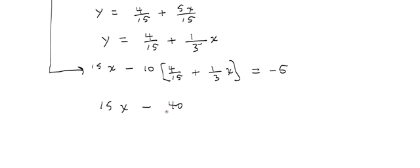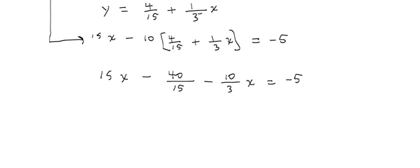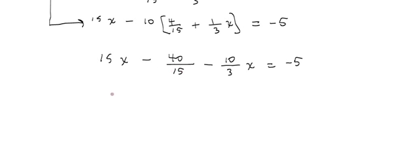Well, that'll simplify it. Let's carry it over for now, 40 over 15, and then we'll simplify it next. And then negative 10 times a positive 1 third x is going to give us a negative 10 thirds x is equal to a negative 5. And like I said, we can simplify this. So we have 15x minus, let's see, 5 will go into both. So it'll be 8 over 3 minus 10 over 3x is equal to a negative 5.